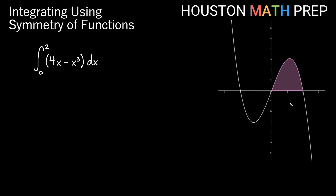Let's look at another example. This function, y equals 4x minus x cubed, is not an even function — folding across the y-axis, the two halves don't line up. We're taking the definite integral from 0 to 2. Using the power rule for each term: the antiderivative of 4x gives 2x squared, since the power goes up by 1 giving x squared, divided by 2, with the 4 out front making it 2. Then minus x to the fourth divided by 4.